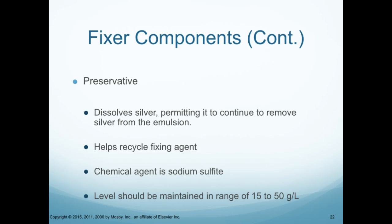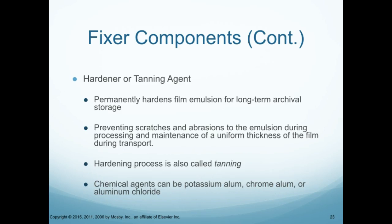The preservative inside the fixer dissolves the silver, permitting it to continue to remove silver from the emulsion, and helps recycle the fixing agent. The chemical agent is sodium sulfide, and the level should be maintained in the range of 15 grams per liter. There is also a hardener or tanning agent in the fixer that permanently hardens the film emulsion for long-term archival storage, prevents scratches and abrasions, and maintains uniform film thickness during transport. The hardening process is also called tanning. Chemical agents can be potassium alum, chrome alum, or aluminum chloride.